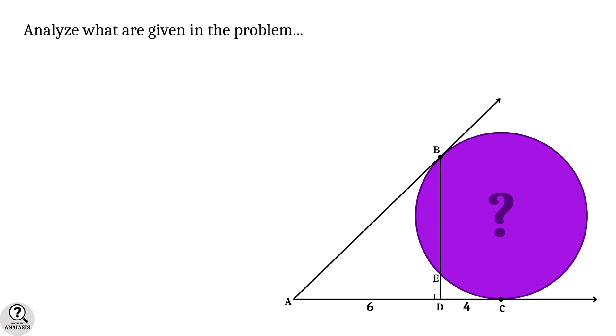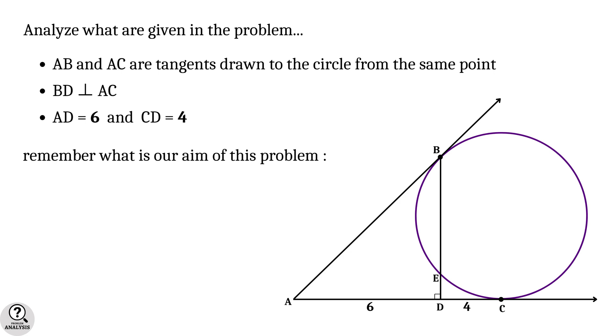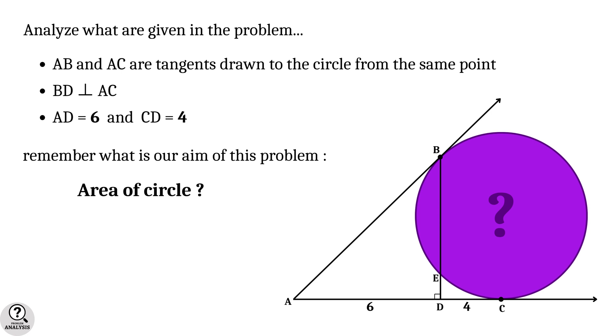Now, let's analyze what are given in the problem. First of all, AB and AC are tangents drawn to the circle from the same point. Secondly, the line BD is perpendicular to the side AC. And finally, AD equal to 6 units and CD equal to 4 units. Now, remember what is our aim of this problem. It is nothing but to find the area of the circle. This is the structure of our problem, so always keep in mind.